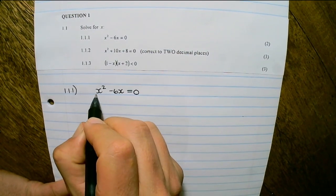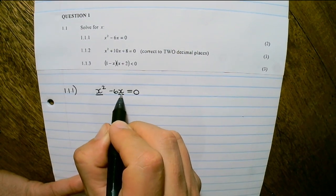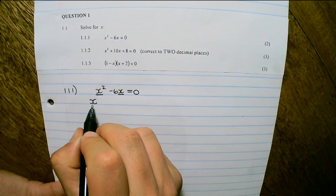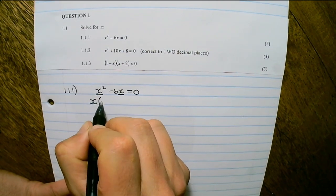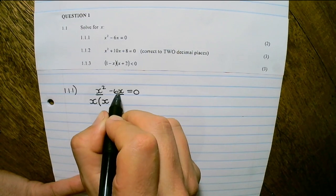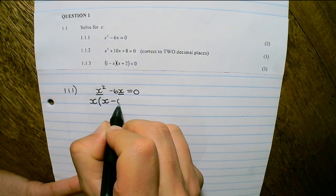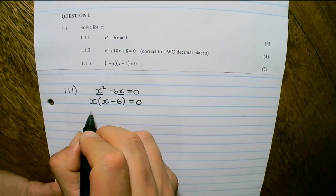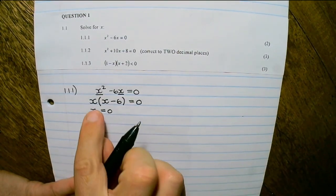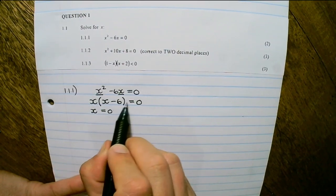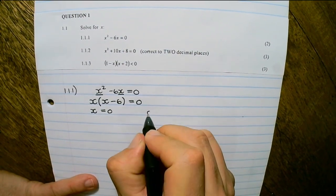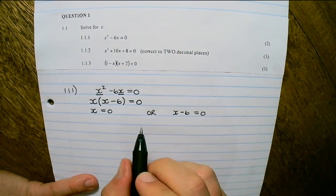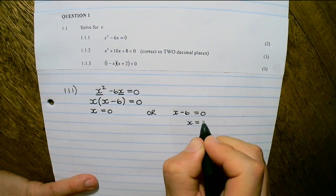We can see that x is the variable that occurs in both terms, so the common factor is x. If I take out x, in the first term an x remains and in the second term if I remove x it is minus 6, and that is equal to 0. Now I can see that x is equal to 0, or x minus 6 is equal to 0 and therefore x is equal to 6.